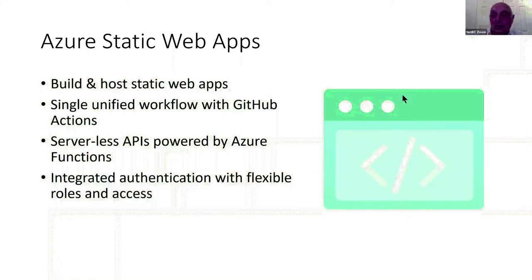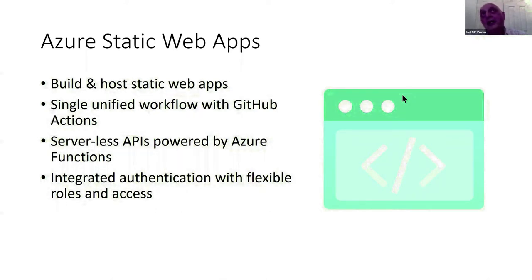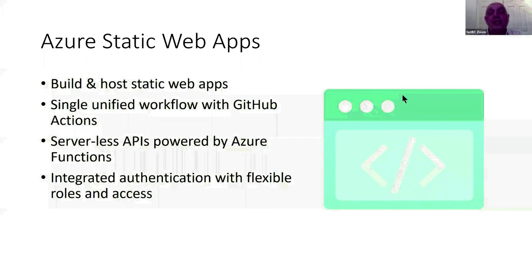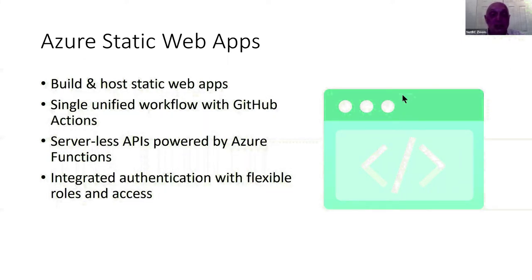About the product — Azure Static Web Apps. The idea here is it simplifies the hosting of a single-page application or a static web app together with its API under one website in Azure. The API is based on Azure Functions, and it provides a single unified workflow using GitHub Actions. The API is delivered through Azure Functions, so it's a serverless API powered by Azure Functions.